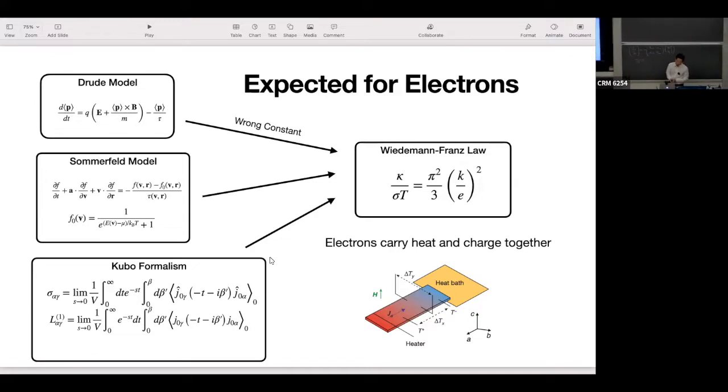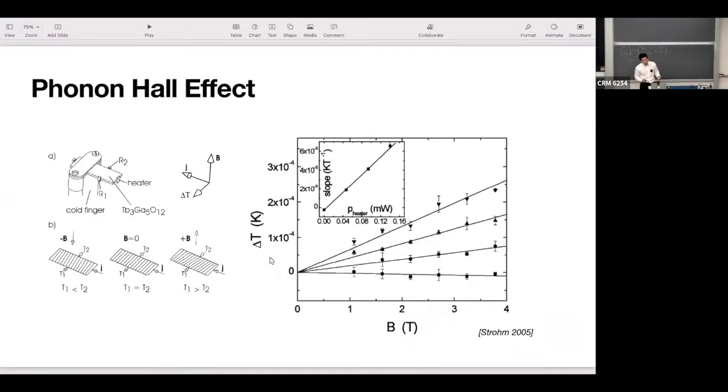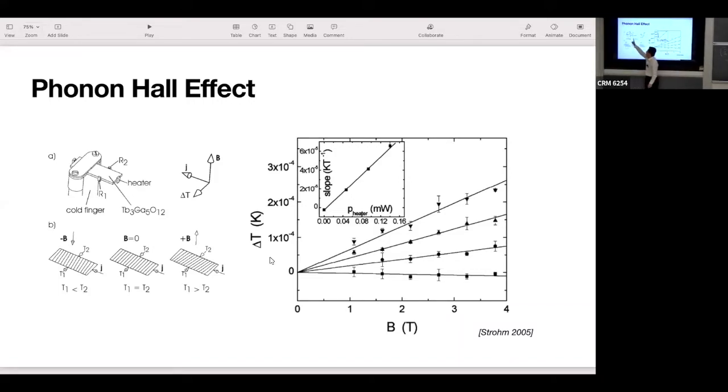So that is for electrons. The surprise is that it seems that insulators also have this effect. In 2005, Strom did an experiment which is very similar to our device. It heats one end, and there are two electrodes, R1 and R2, it measures the temperature there.